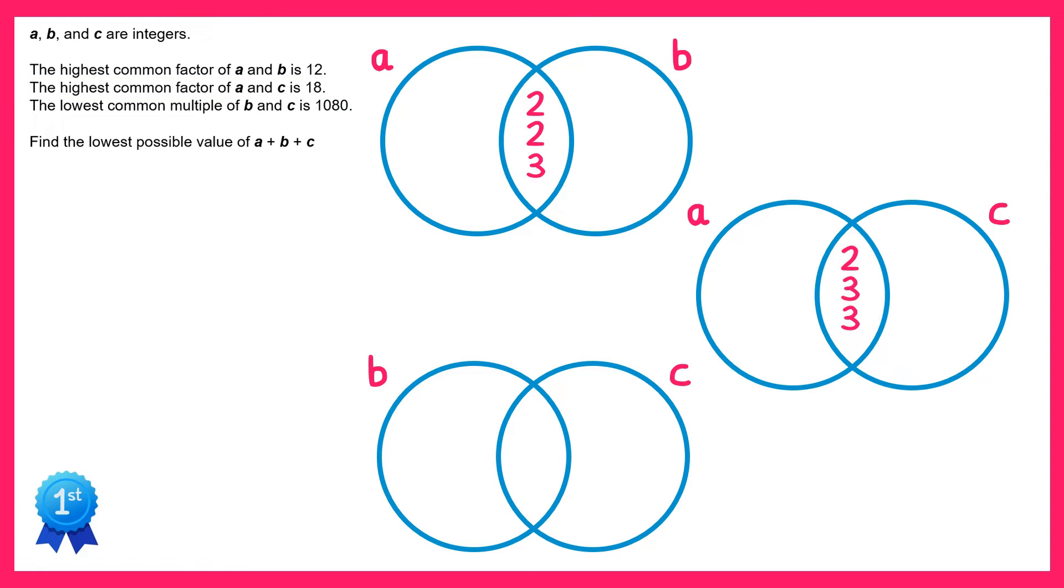Now we can use this information to fill in part of the final Venn diagram as well. If you look at the first Venn diagram, we can see there's a 2 in the intersection here. This means that 2 must be a factor of B. If we look at the second Venn diagram, we also have a 2 here, so 2 must be a factor of C. In a similar way, 3 is a factor of B and 3 is a factor of C.